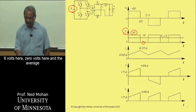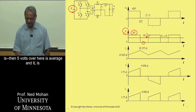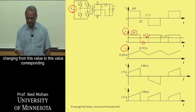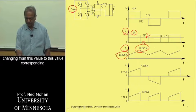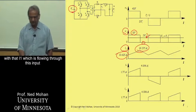8 volts here, 0 volts here, and the average is then 5 volts over here is average, and IL is changing from this value to this value corresponding to that.